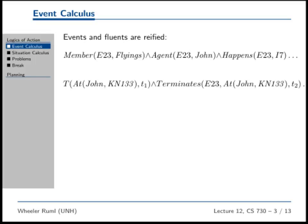The problem with reifying events like this is that if you want to talk about things that are true at the end of the flying, all of a sudden we want to put sentences in as things as well, so that we can state they're related in some way to that event. But in first-order logic, you're not allowed to have predicates as terms — the only thing you can have is a variable, a constant, or a function. So it becomes a little hairy. The event calculus does get complicated, but there are people who study it and know what to do.